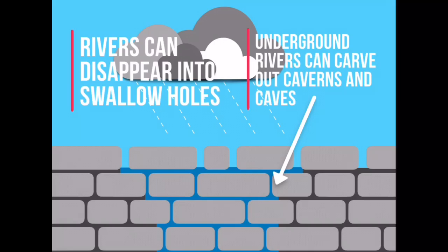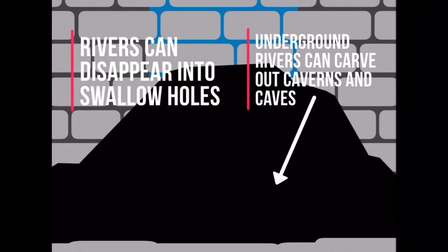Limestone is a porous or permeable rock, meaning water can pass through it. Rivers can disappear into swallow holes at the surface, and as they flow underground can carve out caverns and cave systems.